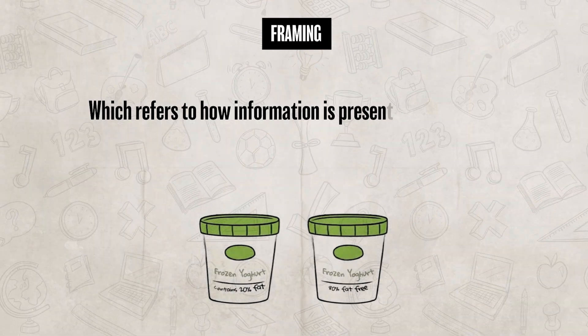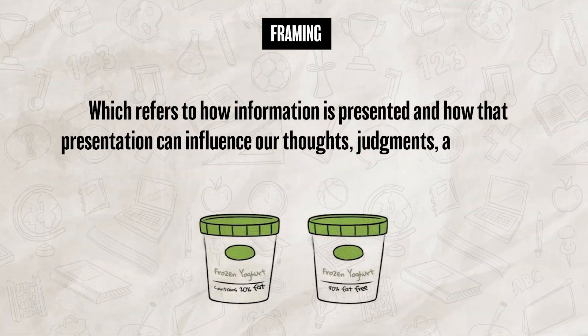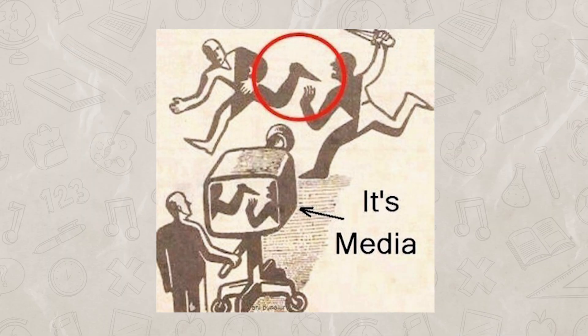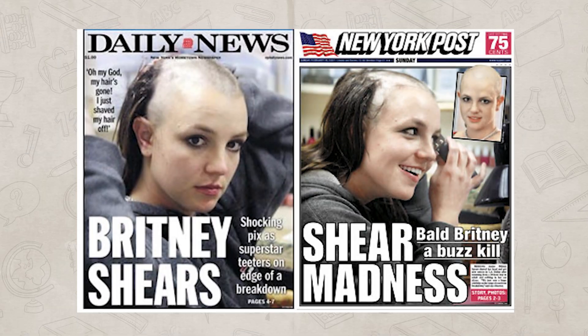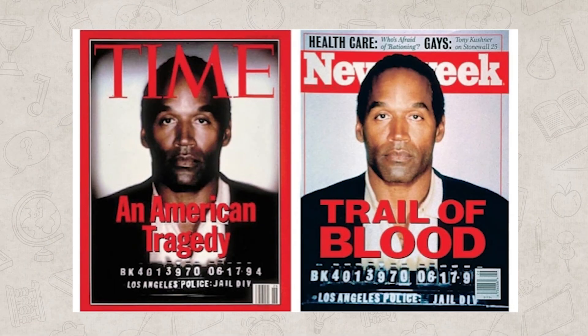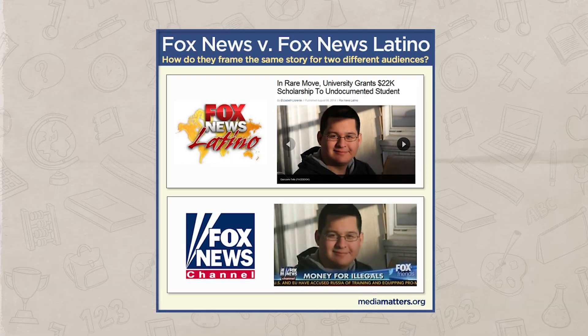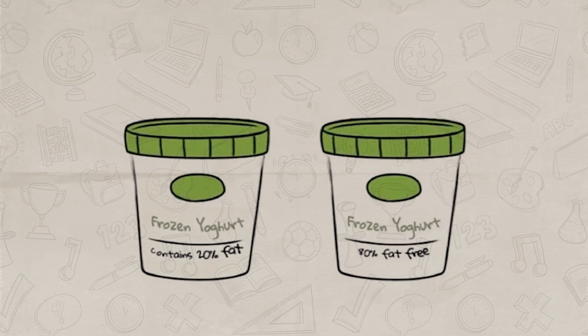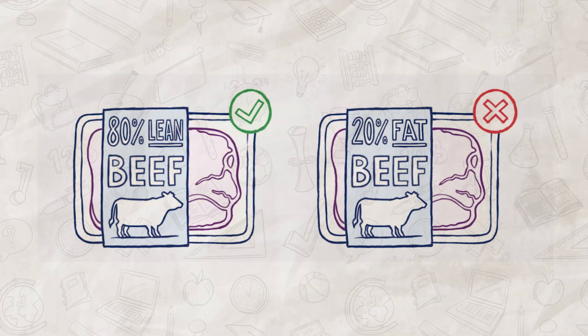Another related cognitive process is framing, which refers to how information is presented and how that presentation can actually influence our thoughts, judgments, and decisions. Depending on how information is worded or structured, our interpretation of it will often change. Framing is especially noticeable in the media — news stories are often framed in a specific way by emphasizing certain details, omitting others, or using emotionally charged language, all to shape how the audience perceives the issue and forms their opinions.